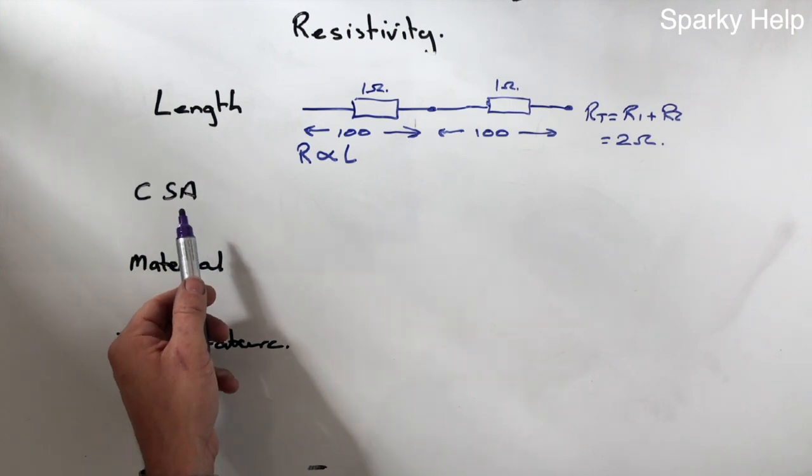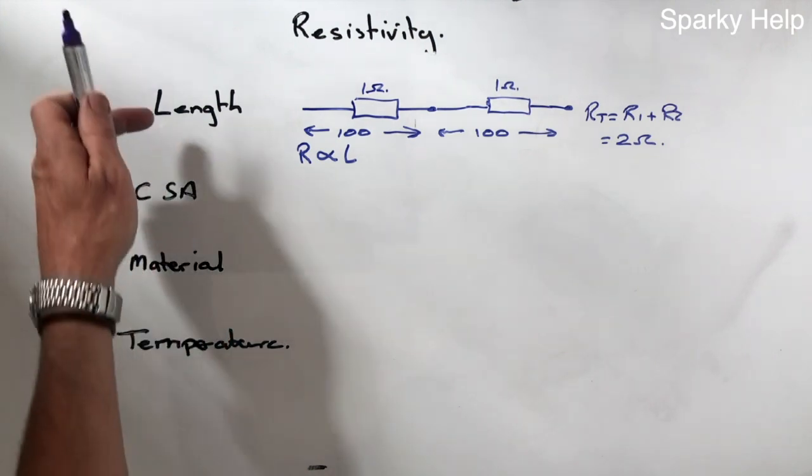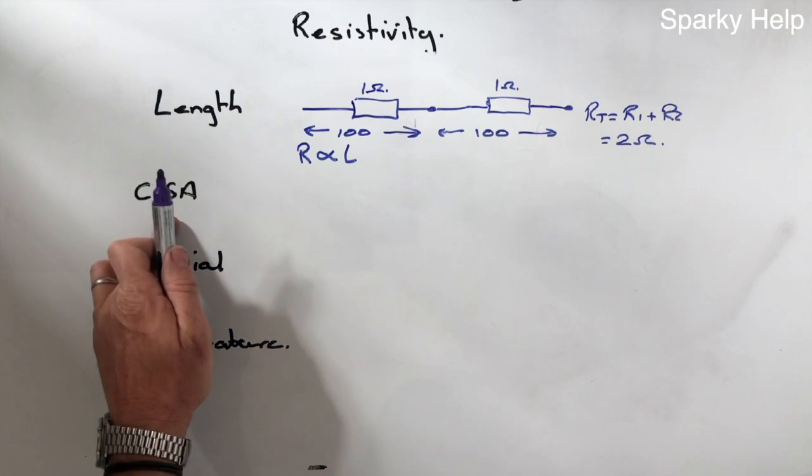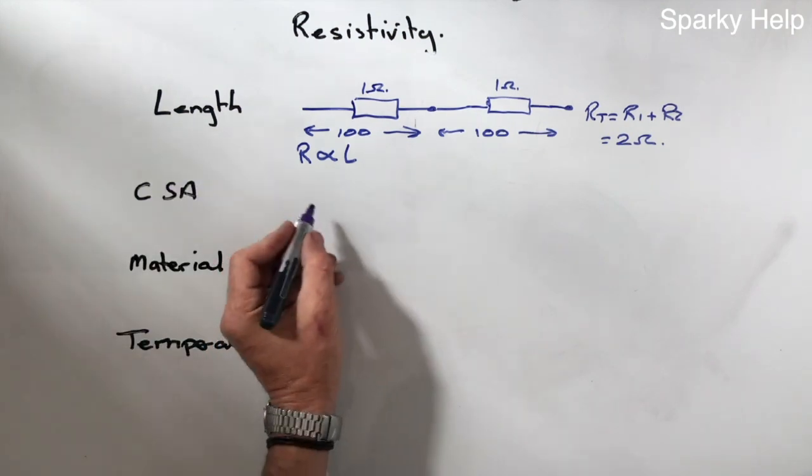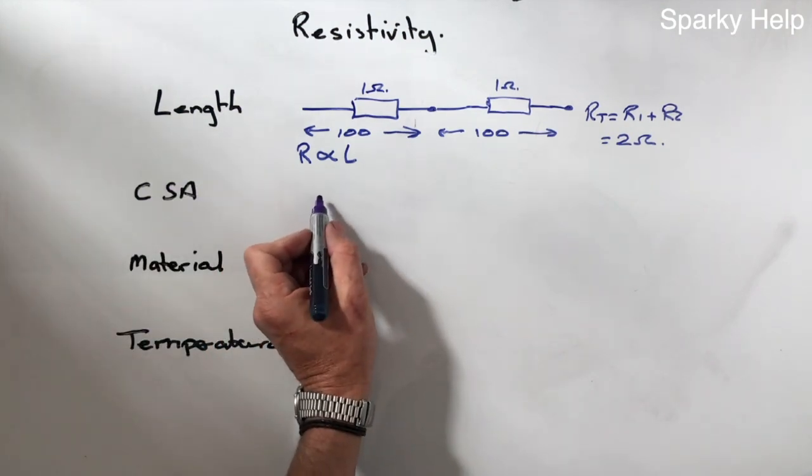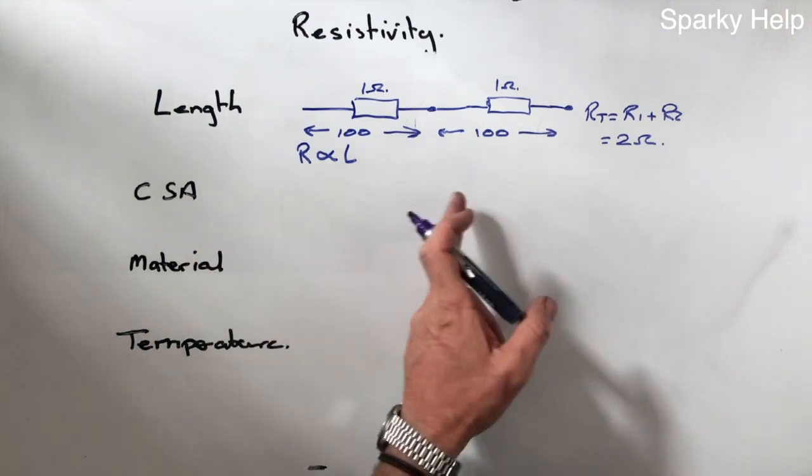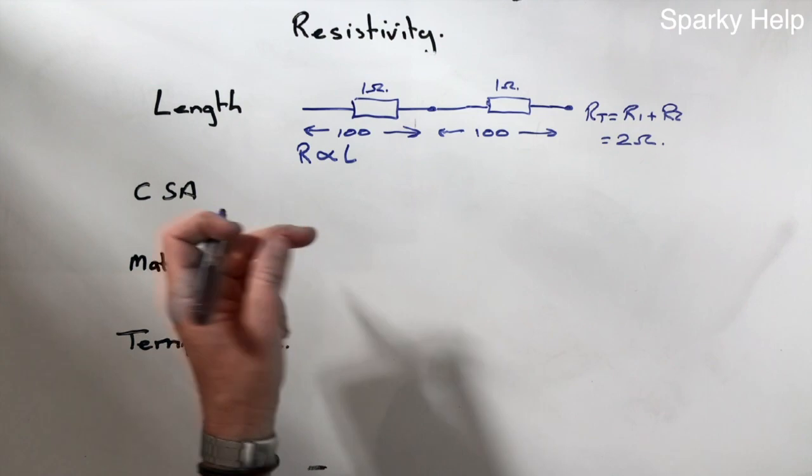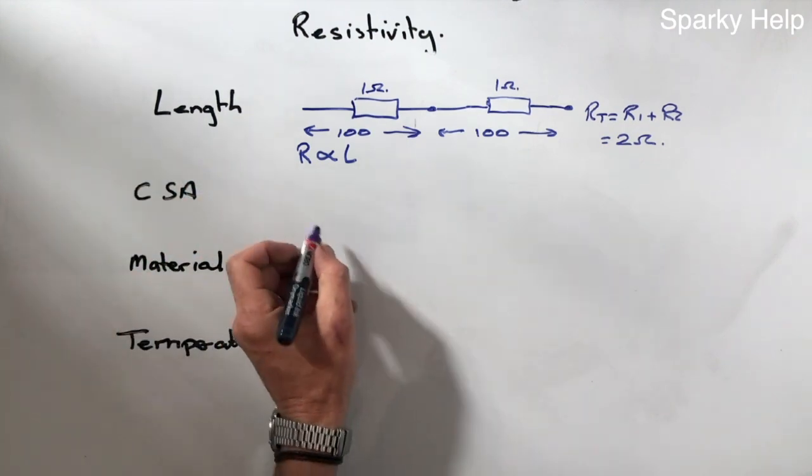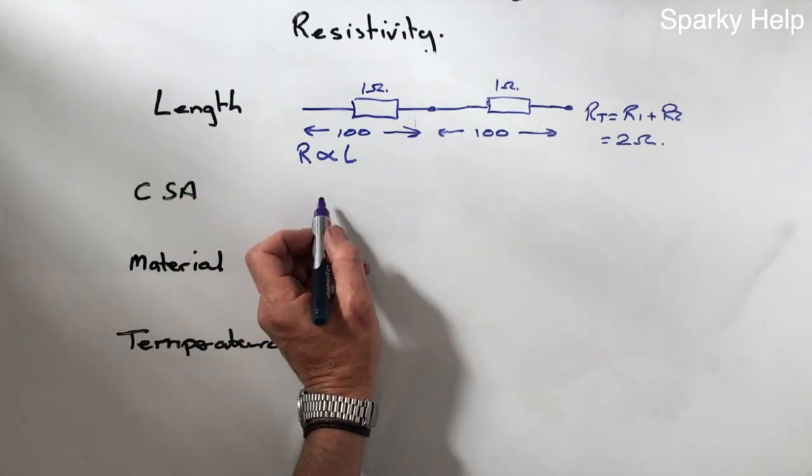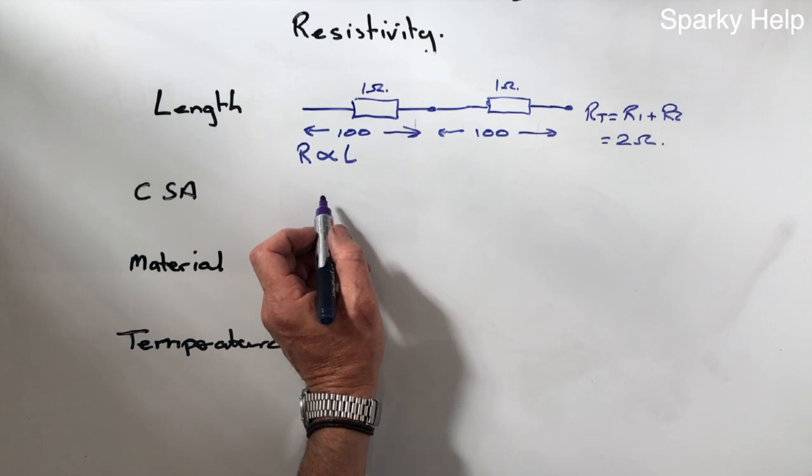In regards to cross-sectional area, providing all of these stay the same again, this time it's a bit like looking at a parallel circuit. If I have two conductors and I put them in parallel with each other, two 1mm conductors, then their resistance will go down. This is said to be inversely proportional to cross-sectional area.